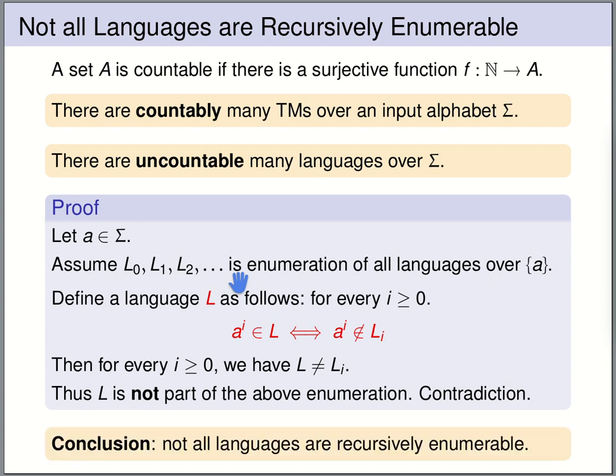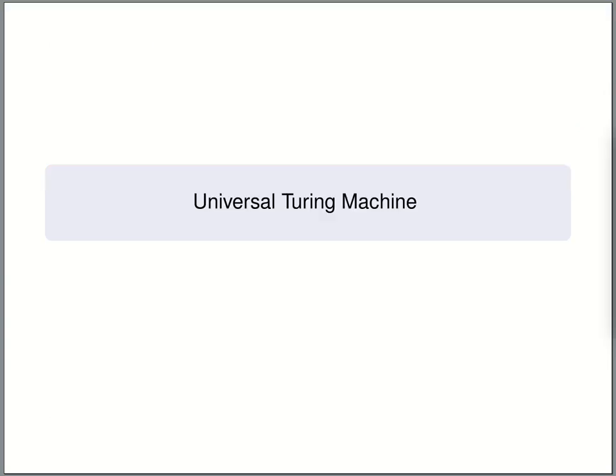As a conclusion: there exist languages that are not recursively enumerable, because we have far more languages than we have Turing machines.